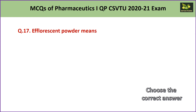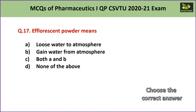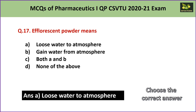Question number 17: Efflorescent powder means A. loses water to atmosphere, B. gains water from atmosphere, C. both A and B, or D. none of the above. This term is used when a powder has the tendency of losing water to the atmosphere. Hence the answer is A — loses water to atmosphere.